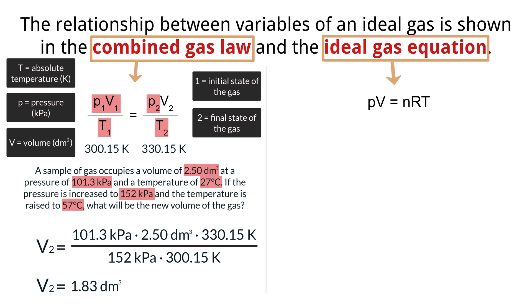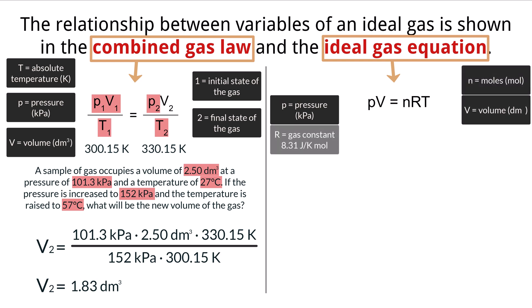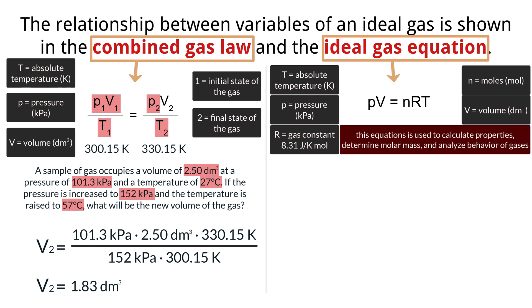P is pressure, V is volume, N is moles of the gas, R is a universal gas constant, and T is temperature, again in Kelvin. The R value is new here, and it is a constant that brings together the proportional measurements for every variable in the equation that holds true for all ideal gases. The value of R is 8.31 joules per Kelvin mole. This equation is commonly used to calculate properties of gases, determine the molar mass of a gas, and analyze gas behavior among other things.